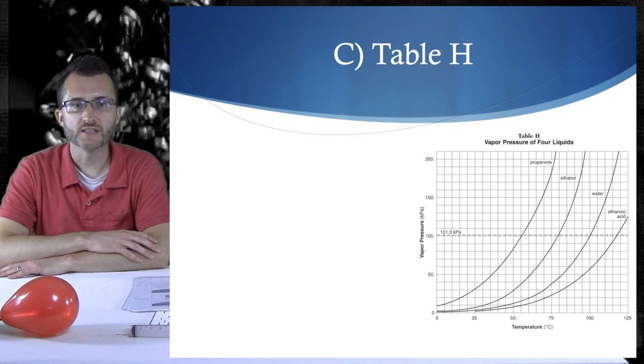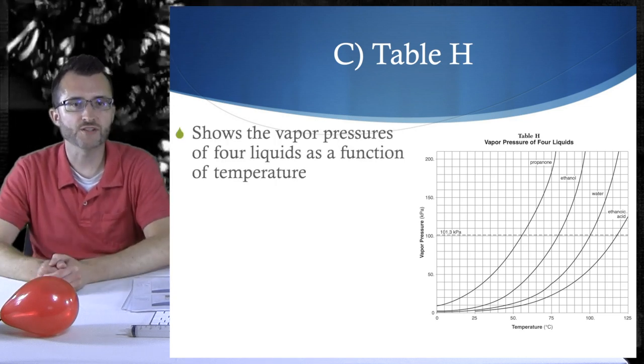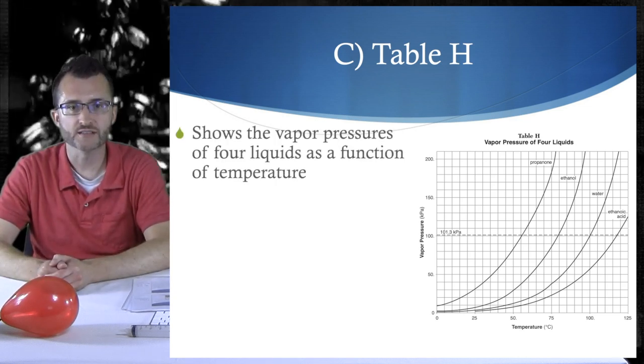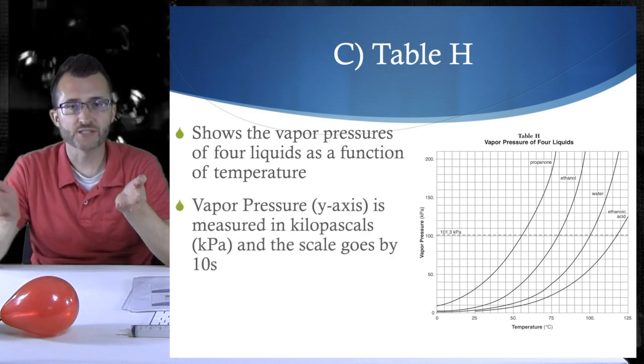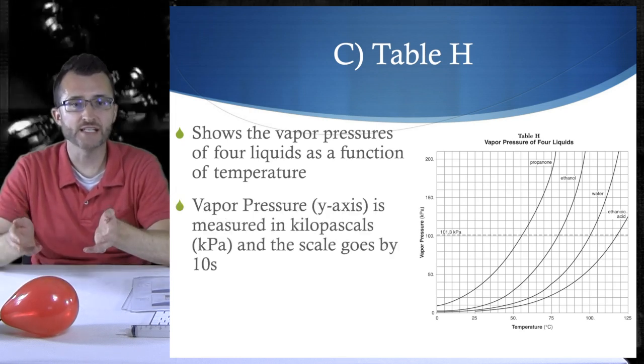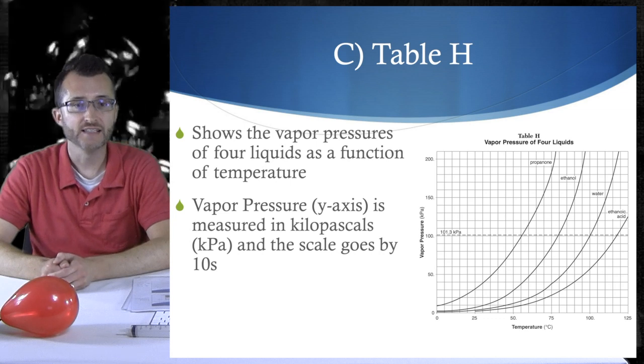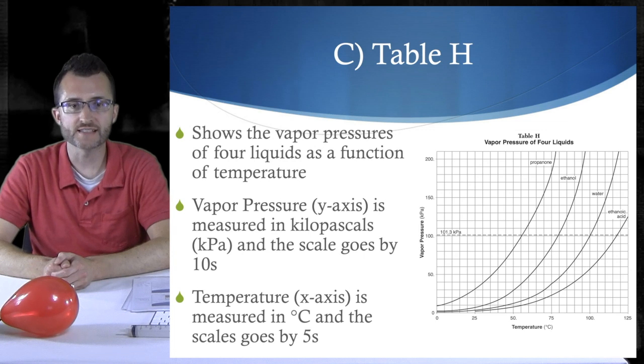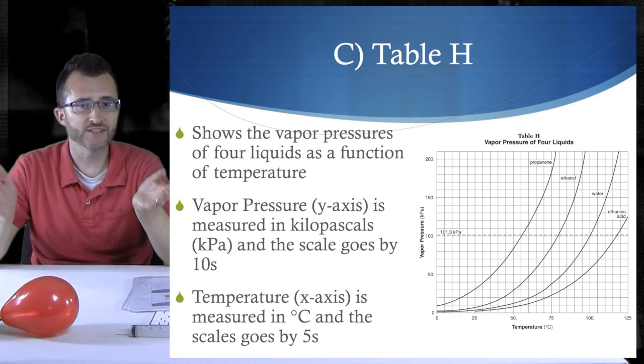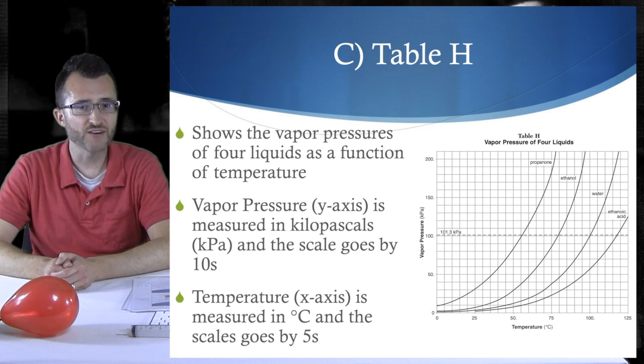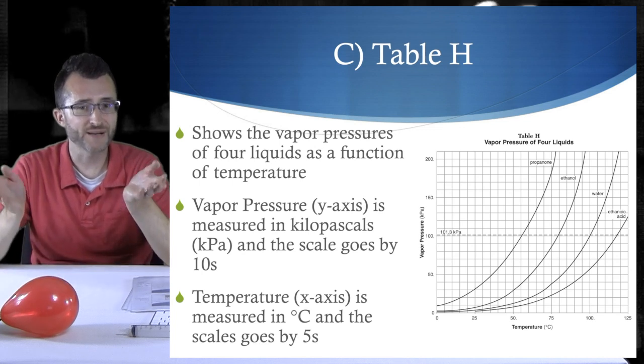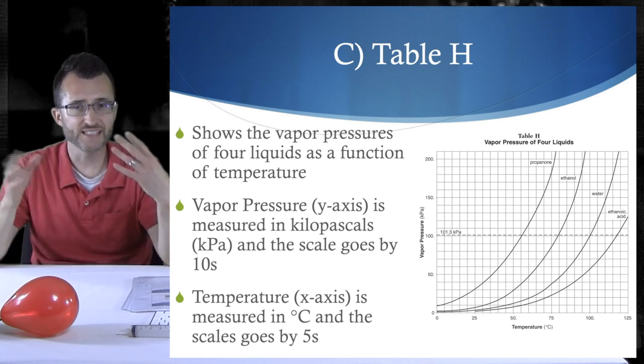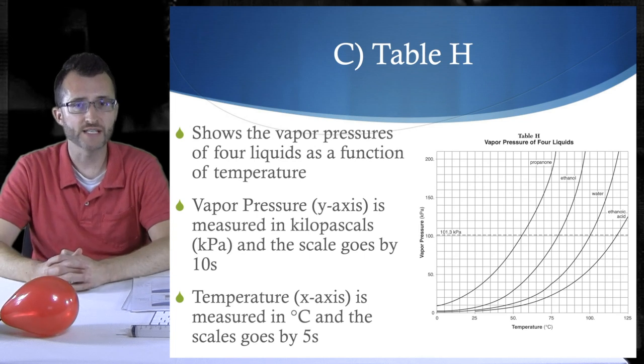Table H. Table H shows the vapor pressures of four liquids as a function of temperature. Notice that vapor pressure, which is on the y-axis, is measured in kilopascals, or kPa, and the scale goes by tens. Temperature on the x-axis is measured in degrees Celsius, and the scale goes by five. Now they don't label every single number, so you want to be careful that you are aware that vapor pressure goes by ten, temperature by five. So it's really easy to mix that up when you're trying to read off the graph.